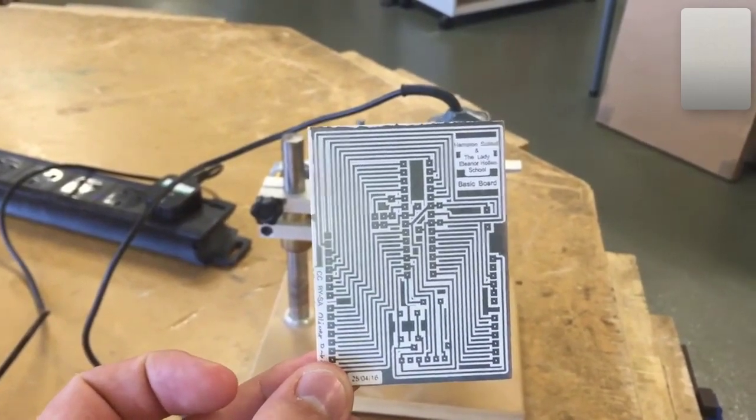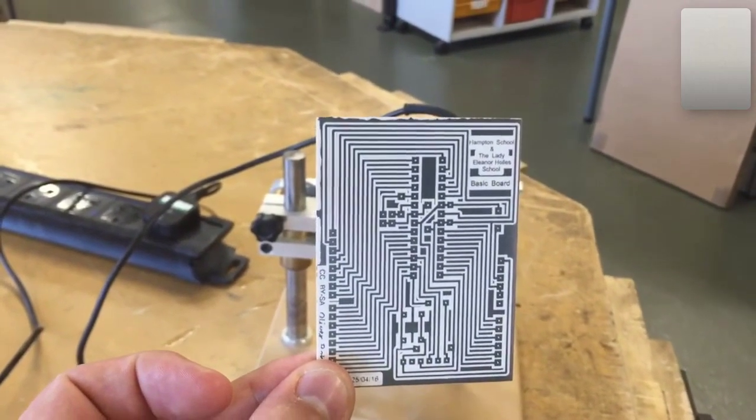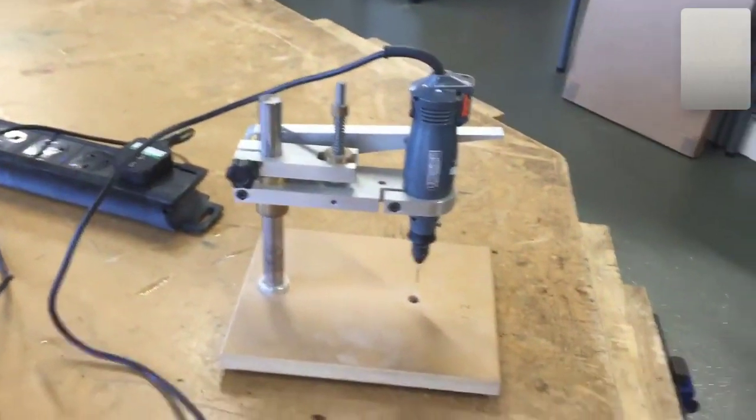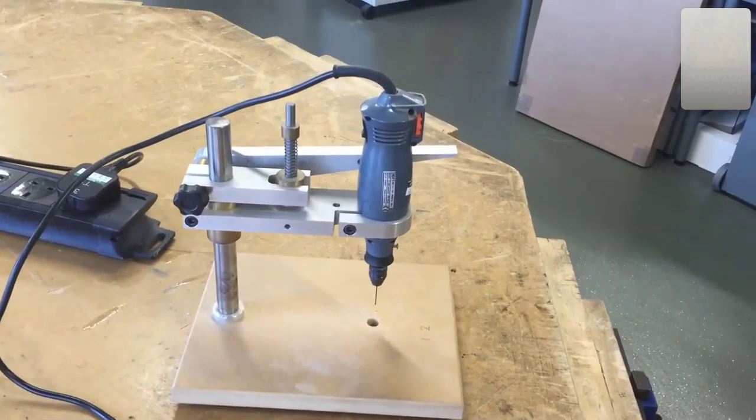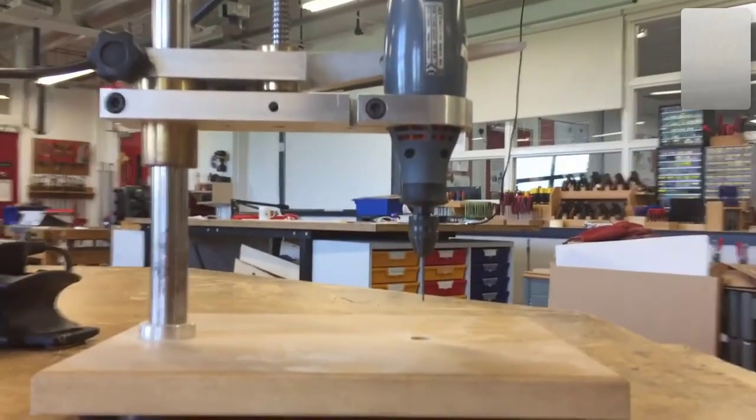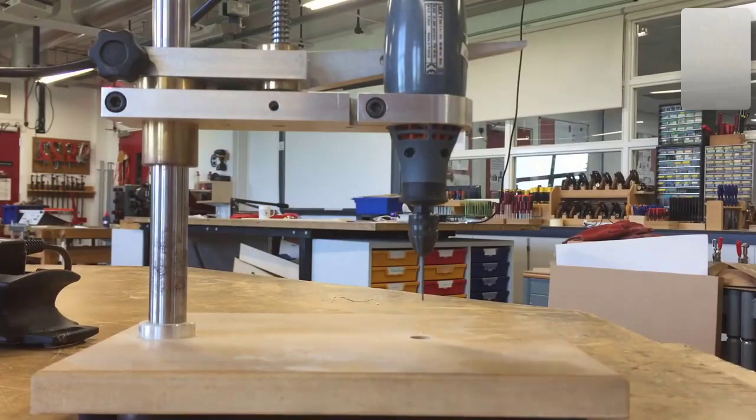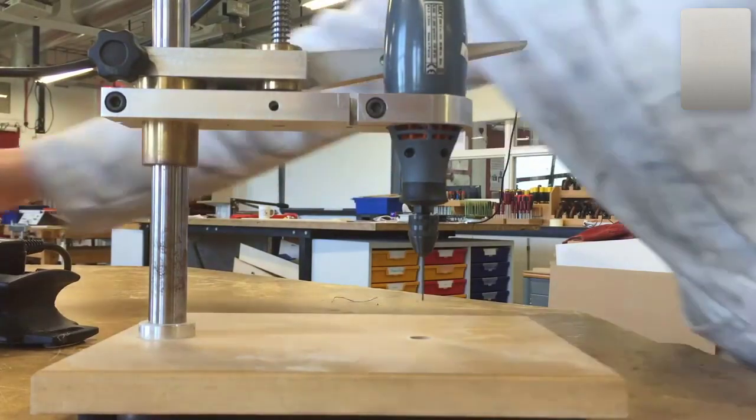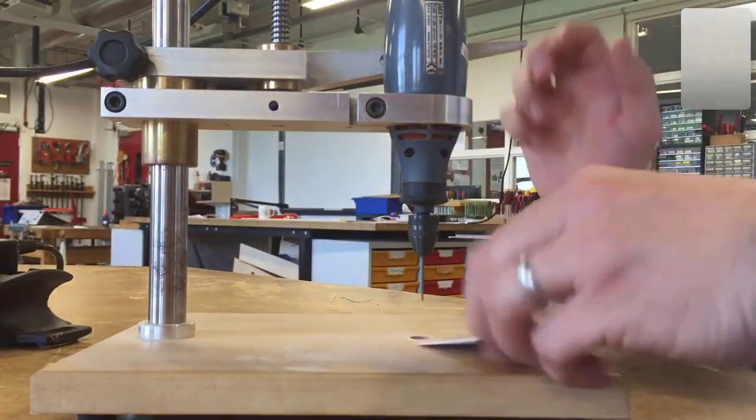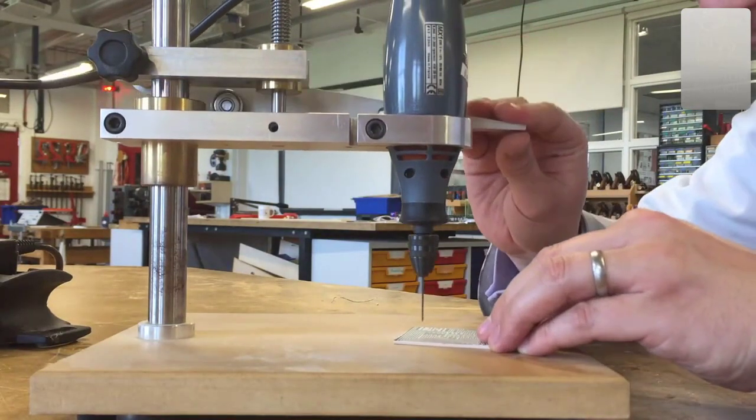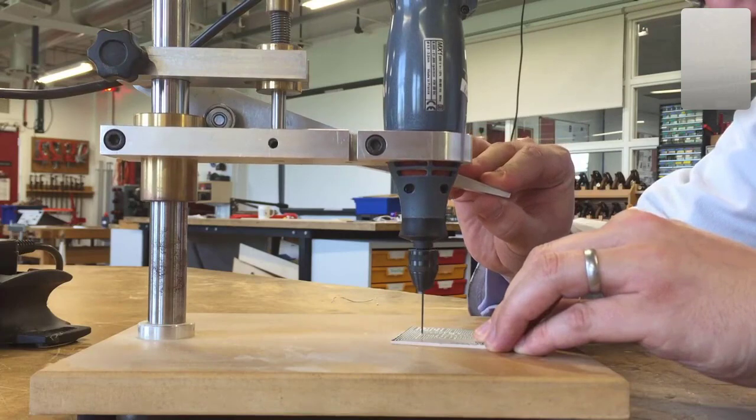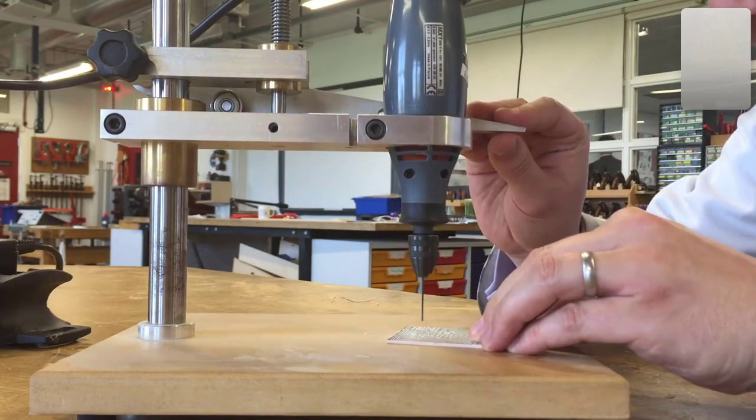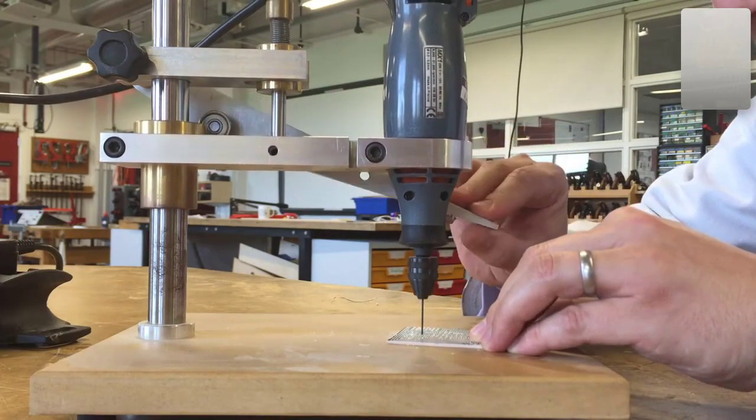The next stage in this process is going to be drilling out all of the holes in the PCB using one of these custom PCB drills made by Hampton School. It's got a one millimeter drill bit inside it and it's simply a case of lining up the drill with the hole, drilling all the way through and repeating for every hole on the board.